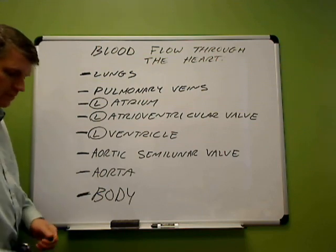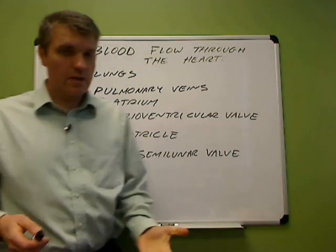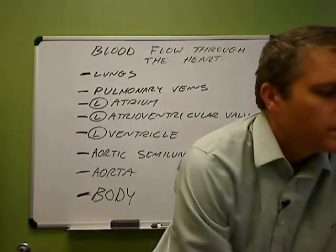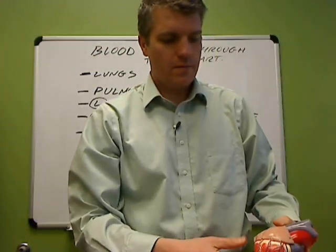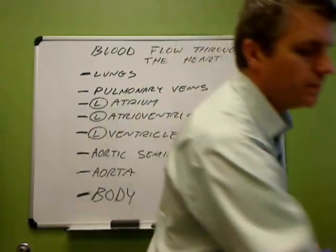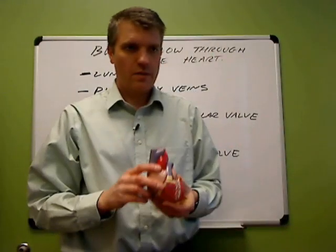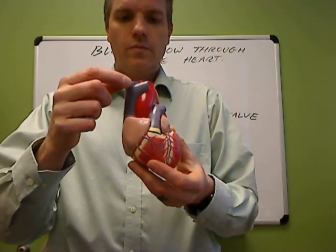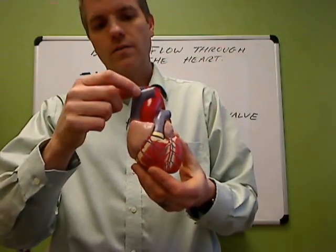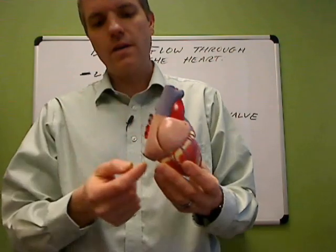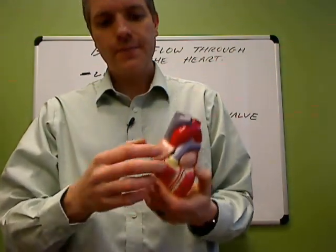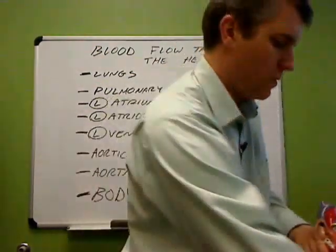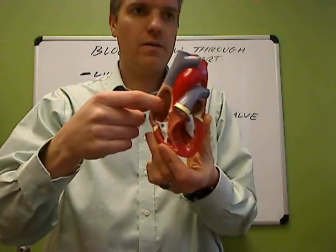So that's blood flow through the heart. To go through it quickly again, I can use a heart model here. This is our small heart model. Blood comes from the body through the superior and inferior vena cava into the right atrium.